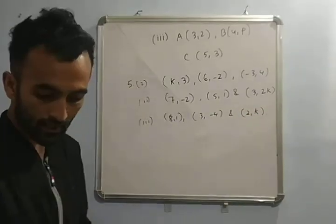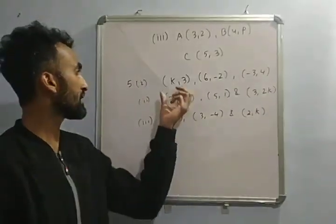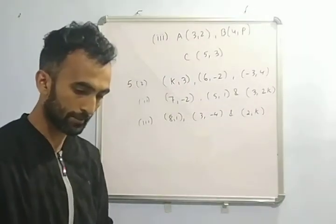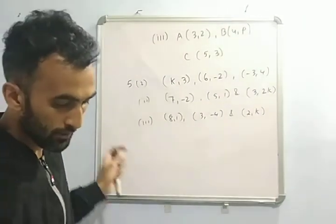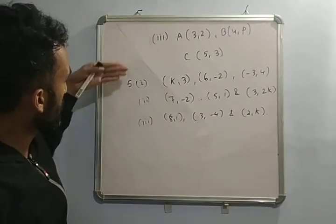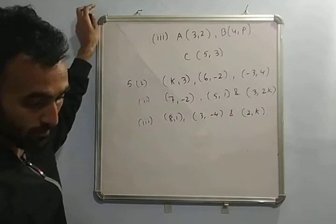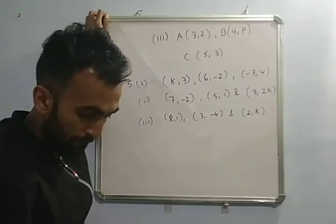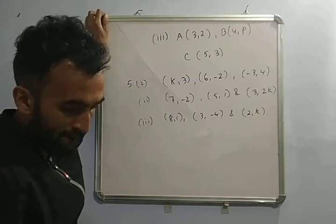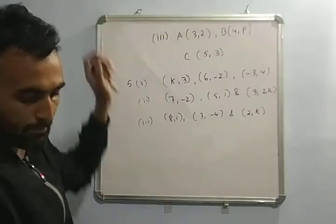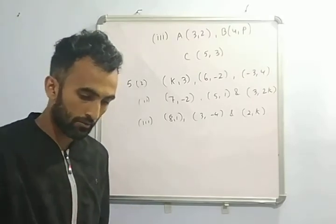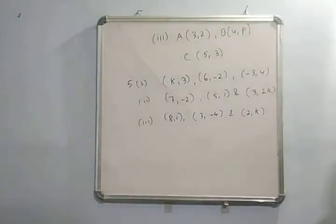You have to find out the value of K if the following points are collinear — same thing: area of triangle equal to 0, use the same concept. So these 4 questions are the same type — you do it by yourself and please let me know. In the next part I will give you the next thing. Thank you.